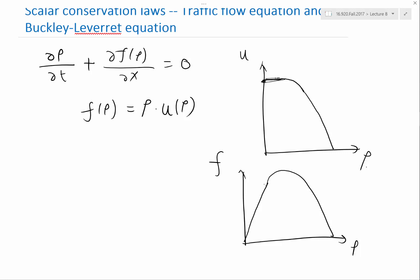Because think of the characteristics. For Burgers equation, the characteristics df/du would be an increasing function of u. Here, the characteristics df/drho would be a decreasing function of rho.